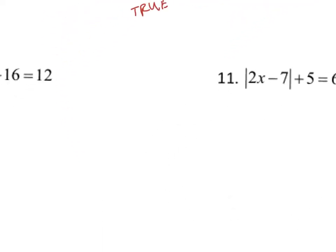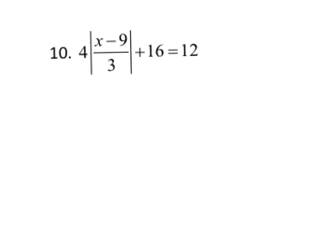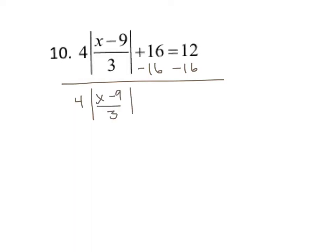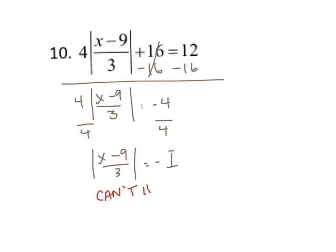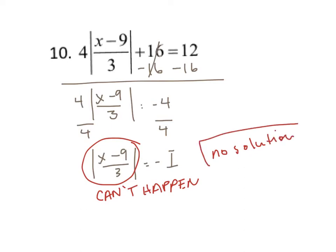Let's look at two more questions. Number 10 is an absolute value equation, so I know I'm probably going to get two solutions, but I've got to watch out for zero solutions. After the first step, I get 4 times the absolute value of (x minus 9) over 3, and the 16 minus 16 goes away, leaving negative 4. I can already see what's happening — dividing by 4 gives me the absolute value of (x minus 9 over 3) equals negative 1. That simply can't happen, because the absolute value of something always needs to be positive. So the answer is no solution.